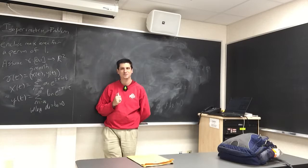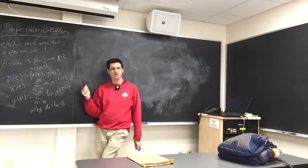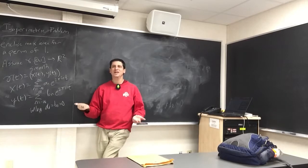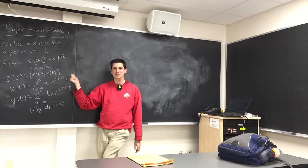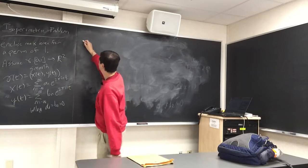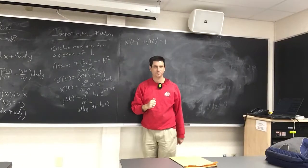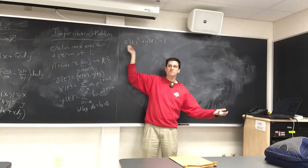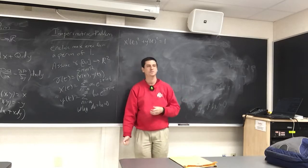Now let's recall parametrizing a curve by unit speed. We want x′(t)² + y′(t)² = 1 — that is, the square of the speed equals 1, so the speed is 1. This means I'm always traveling the curve at a constant speed of 1. This is why I'm choosing the perimeter to have length 1: if I'm going unit speed and I go for one unit of time, my arc length should be 1.